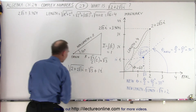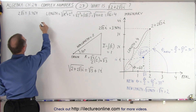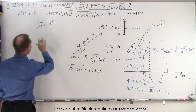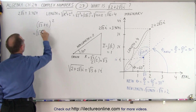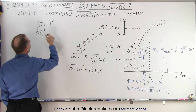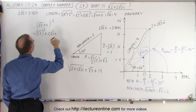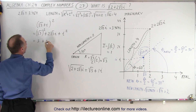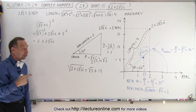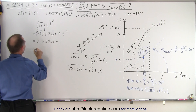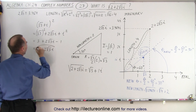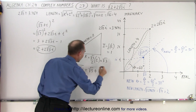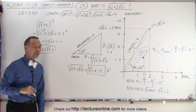Now, of course, we want to make sure we did it correctly, so we're going to square the number and hopefully get back the original number. So we take (√3 + i) and square that. When we square the binomial, we take the first term squared — so (√3)² — plus twice the product of the two terms, so 2 times √3 times i, plus the last term squared, i². This becomes 3 plus 2√3·i, and since i² equals negative 1, we subtract 1, giving us 2 plus 2√3·i — which is of course the original number we started with. Therefore, this is indeed the square root of our original complex number.